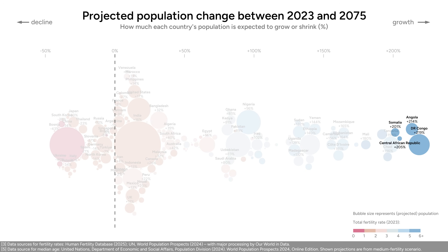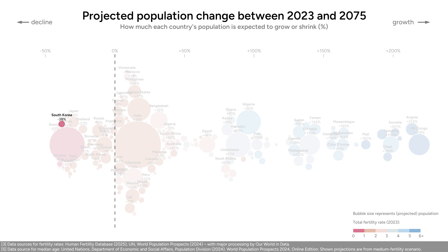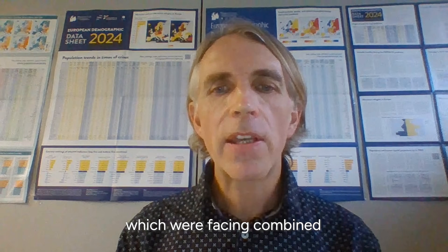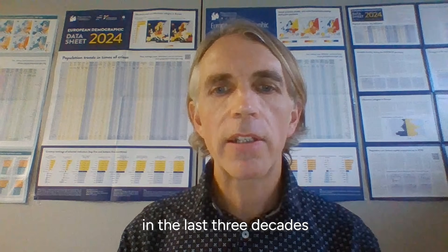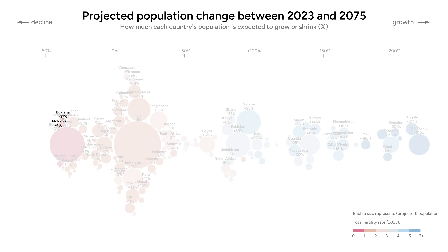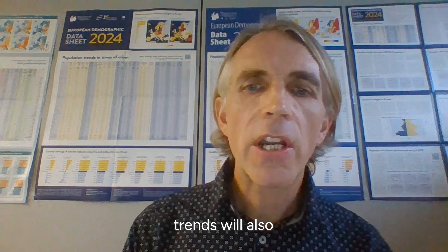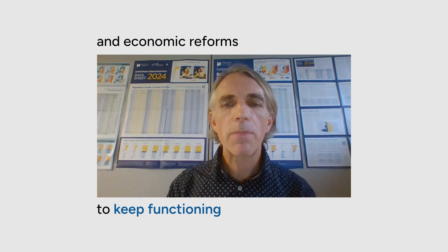Looking at how much each country's population is projected to change by 2075: four African countries are expected to grow more than 200%, tripling their population. South Korea is expected to lose 38% of its population. At the bottom, Bosnia loses 43%. Some eastern and southeastern European countries — like Moldova or Bulgaria — have faced a combined impact of very low fertility and out-migration over the last three decades, and their future demographic trends will very seriously impact their ability to deal with aging, economic reforms, and to keep functioning.